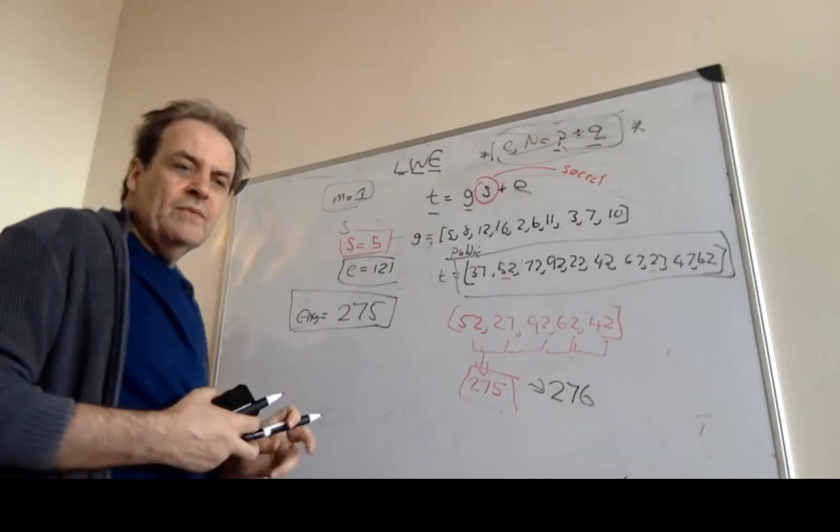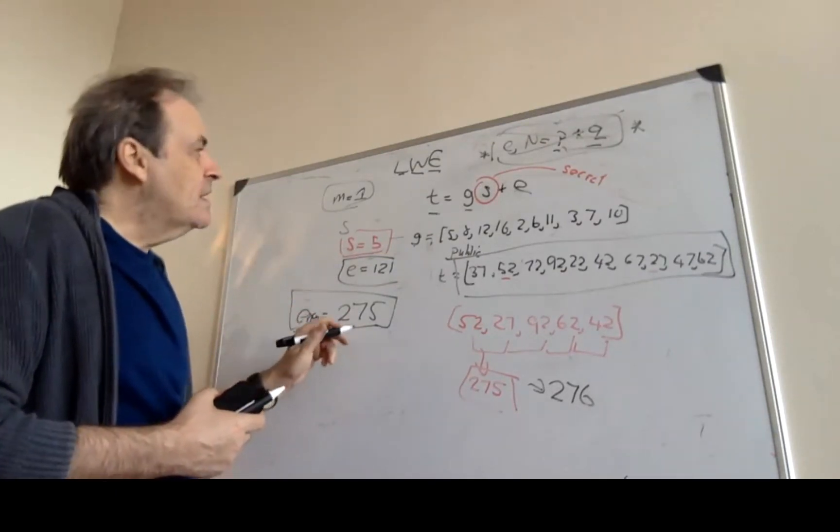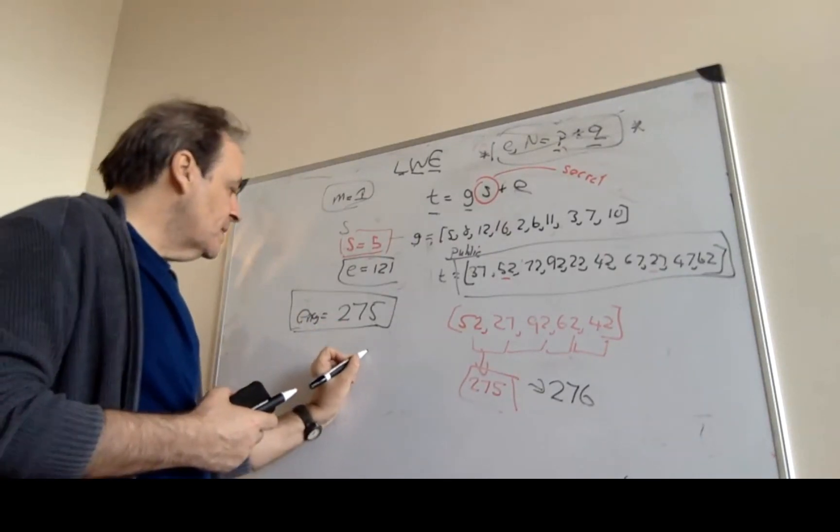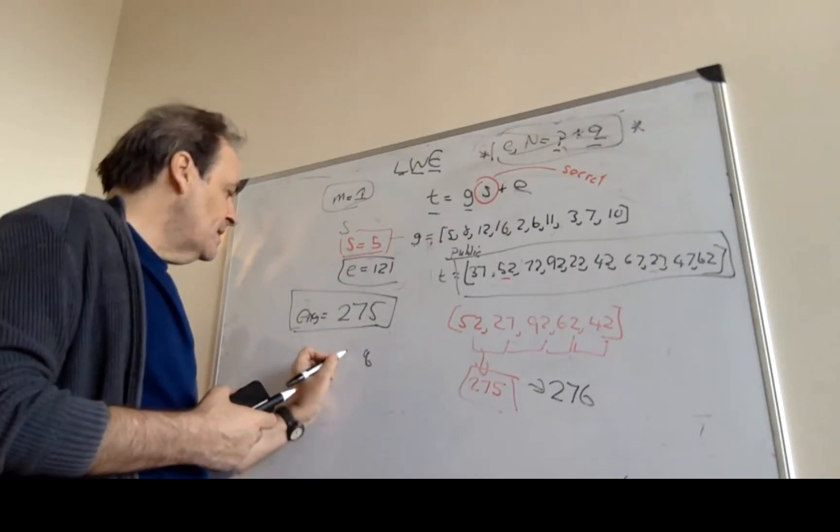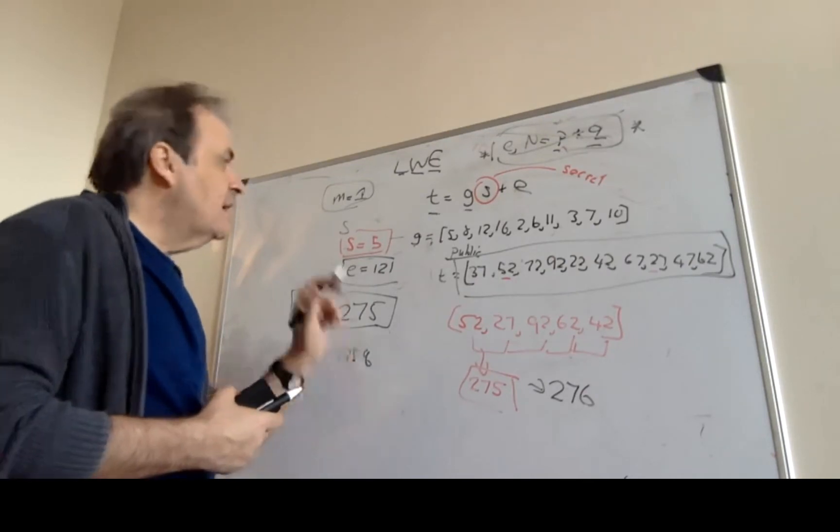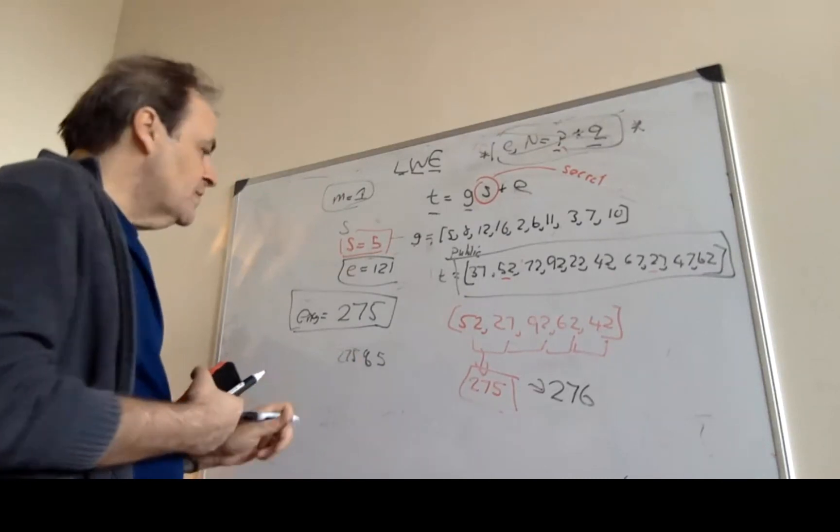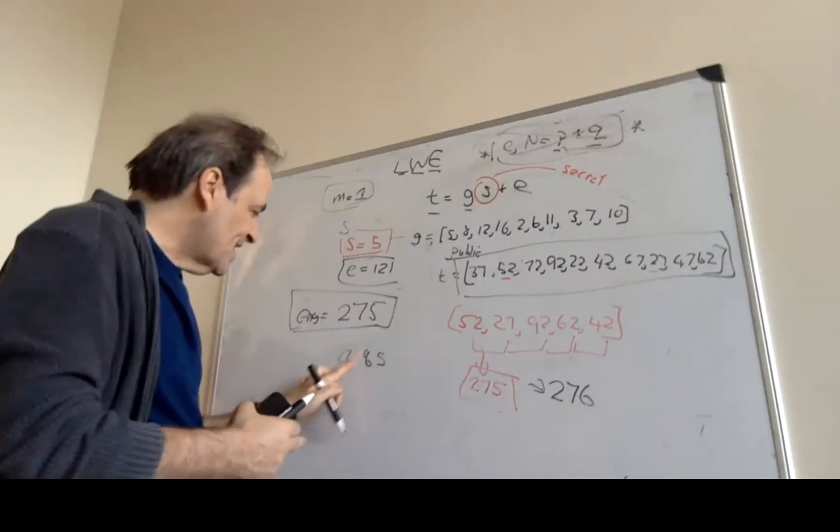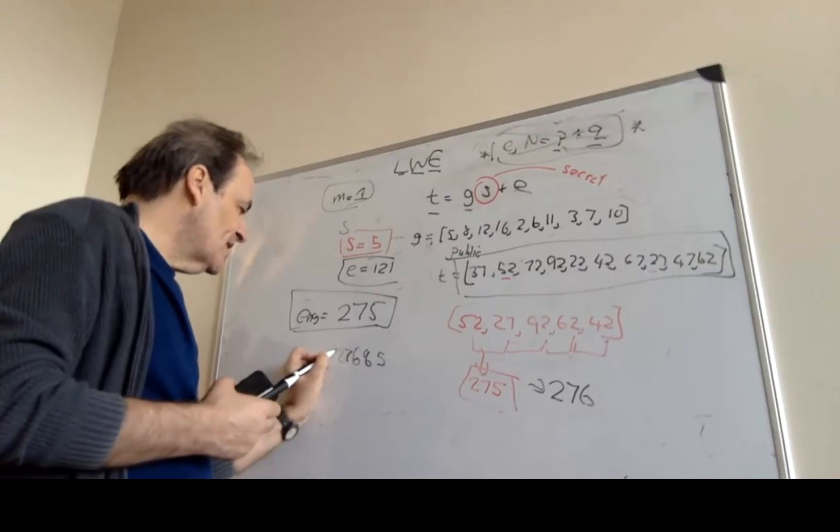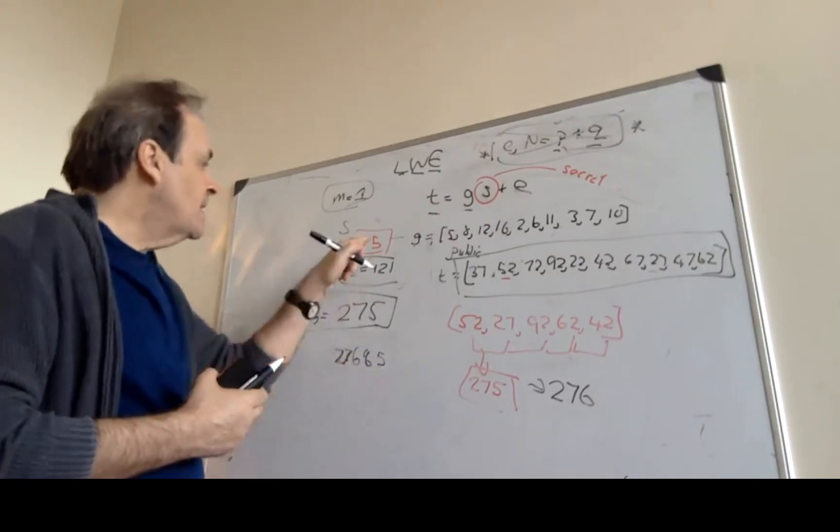Now what we have to do is we have to be able to decrypt. And the way that we do that is that we take the remainder of 276 and we take our secret of 5.